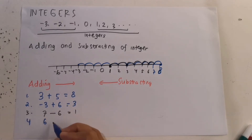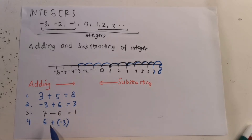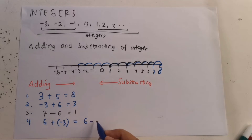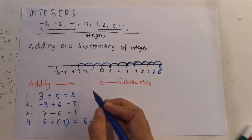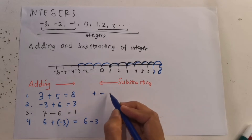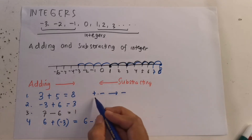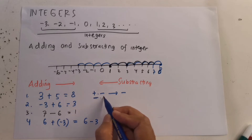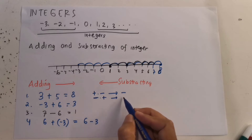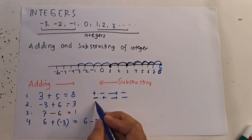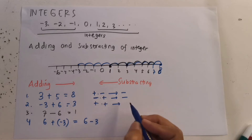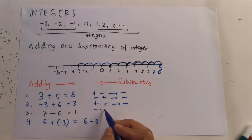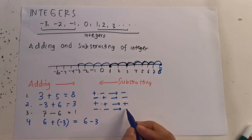Next example: 6 plus negative 3. Plus negative 3 means the same as 6 minus 3. You have to remember: if plus meets minus, the answer is negative. Minus meets positive, the answer is negative. Positive meets positive, the answer is positive. Negative meets negative, the answer is positive.